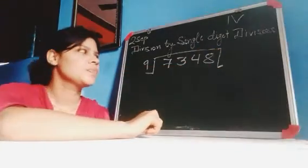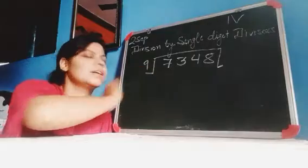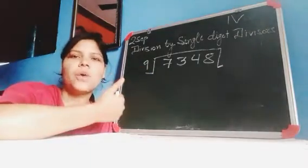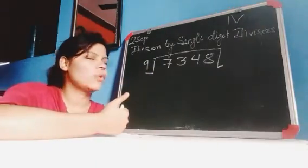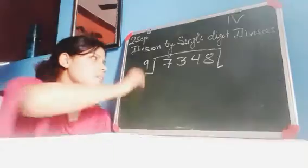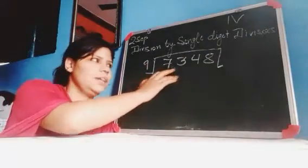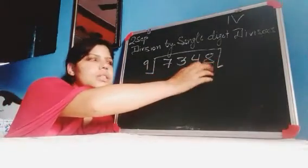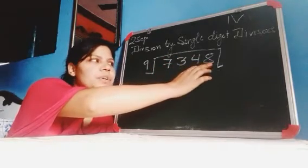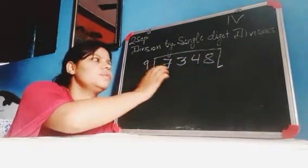When a number is divided by a single digit number, how can we solve? In division, we don't solve from the ones place, we solve from this place. First, we check one digit.